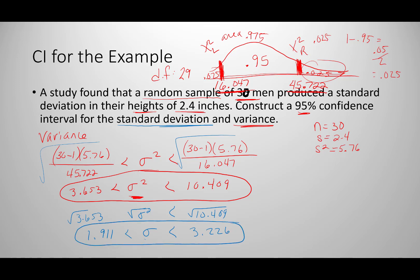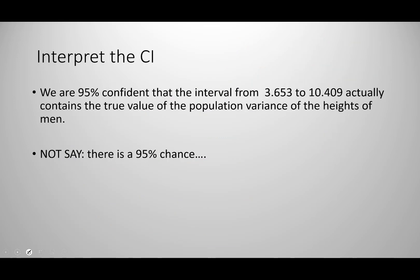When interpreting a confidence interval, use a phrase like: 'We are 95% confident that the interval from [lower limit] to [upper limit] actually contains the true value of the population variance of the heights of men.' Make sure to use the variance values if asked about variance, or the standard deviation values if asked about standard deviation. We do not say there is a 95% chance that the interval contains the value — the phrasing above is the standard way to interpret a confidence interval.